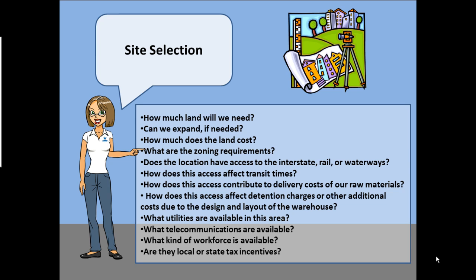A company must consider several things when determining the proper location for a distribution center or warehouse facility, such as: How much land will we need? Can we expand if needed? How much does the land cost? What are the zoning requirements? Does the location have access to the interstate, rail, or waterways? How does this access affect transit times? How does this access contribute to delivery costs of our raw materials? How does this access affect detention charges or other additional costs due to the design and layout of the warehouse? What utilities are available in this area? What telecommunications are available? What kind of workforce is available in this area? Are there local or state tax incentives?